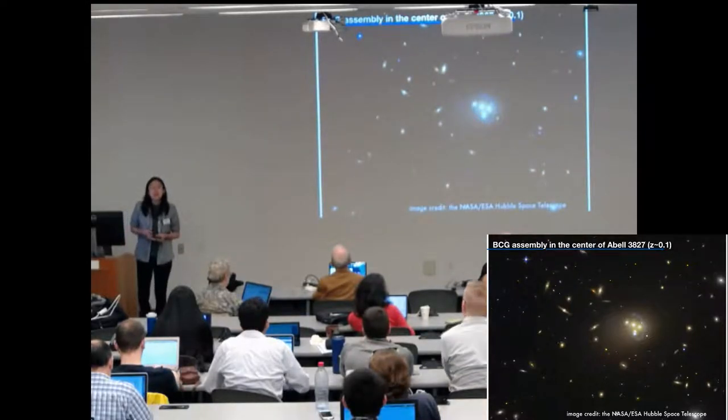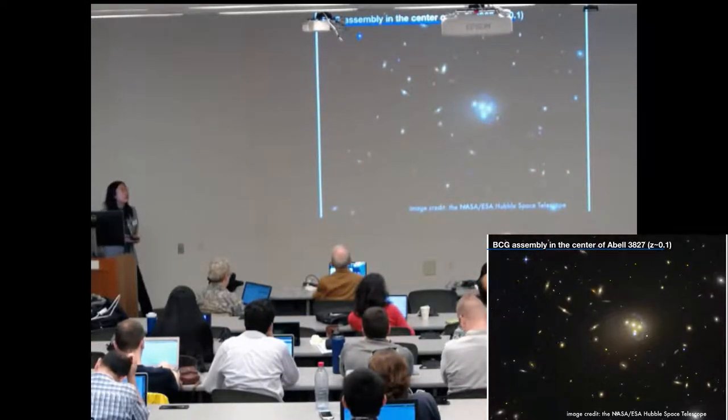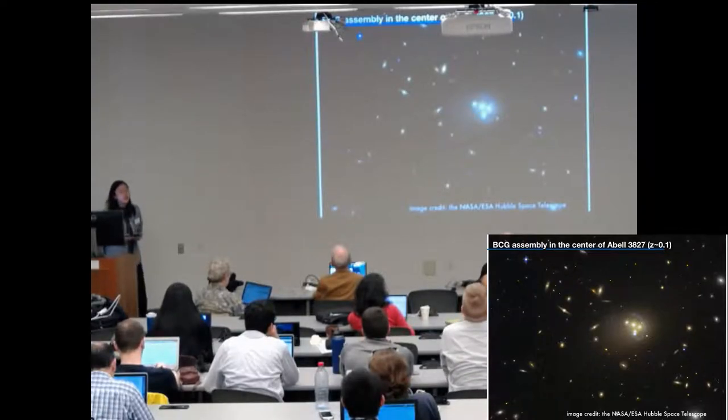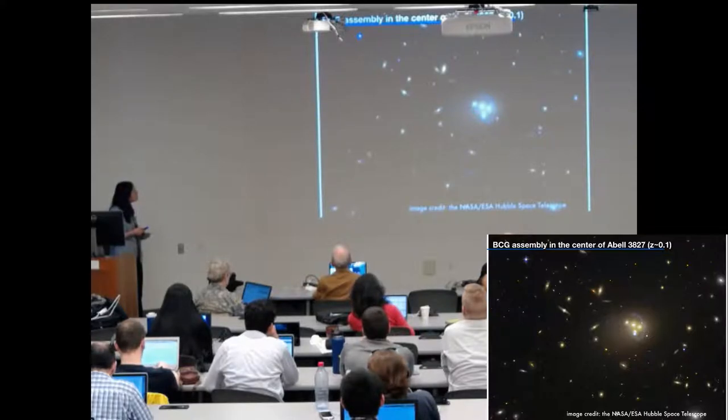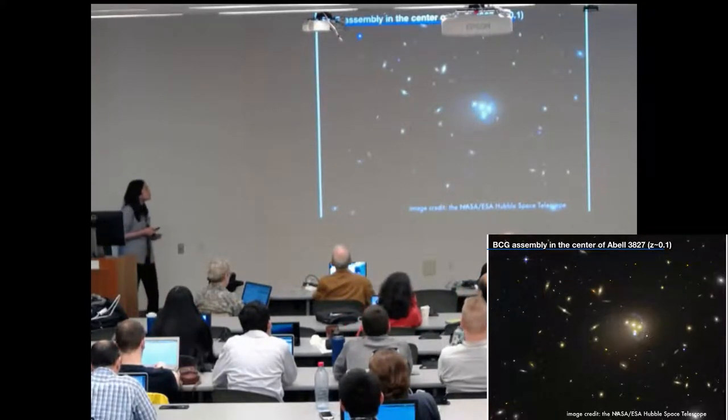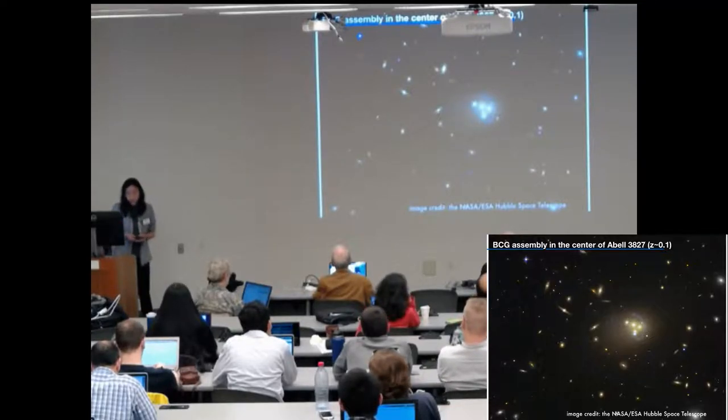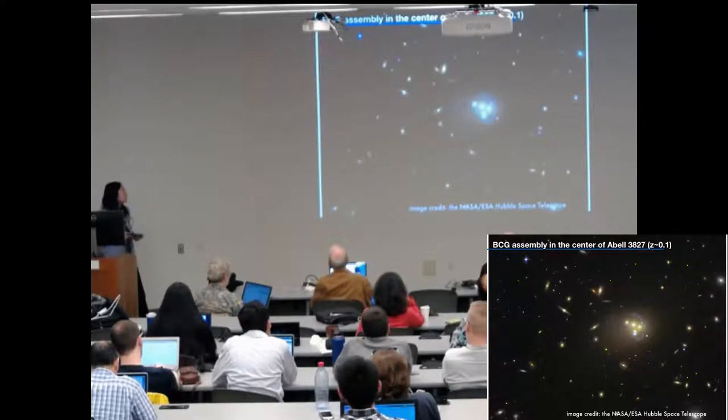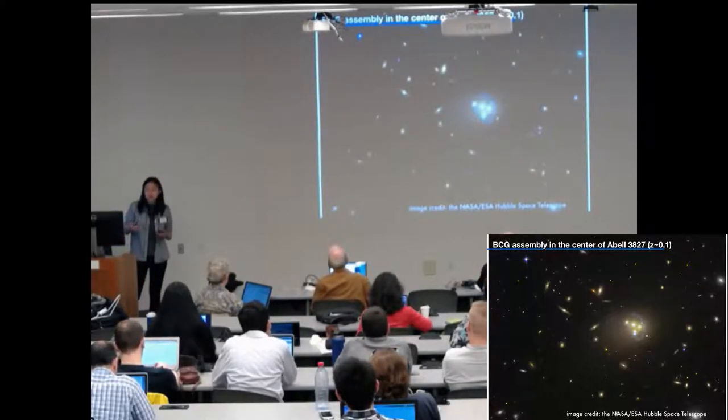I'm going to present the stellar population analysis on a special galaxy cluster Abell 3827. We can see there are five nuclear galaxies in the center, and they are involved in a future BCG assembly. We are going to compare the stellar population scaling relation in this special environment against the general early type galaxy sample.